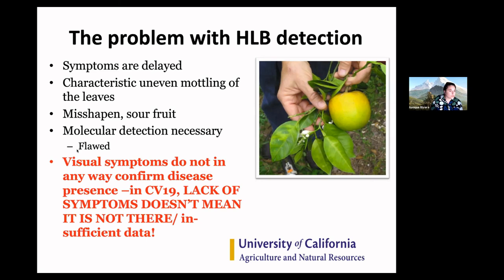Just like with COVID-19, we use molecular tools to identify the disease. What you're doing is basically looking for the DNA of the bacteria in the plant material, the same way you're looking for the RNA of the virus in human blood or tissue swabs. It's flawed because of the uneven spread of HLB throughout the tree — it takes a long time for HLB to spread throughout the tree such that you could pick a leaf, do this test, and get a positive.